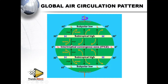It depends on the zone where they are, because we have what we call the tropical Easterlies and the polar Easterlies. The polar Easterlies are called so because they are moving from east to west but originating from the poles. The tropical Easterlies are so named because they are moving from the tropics.